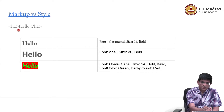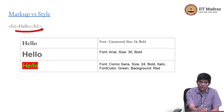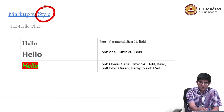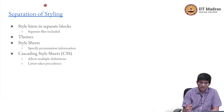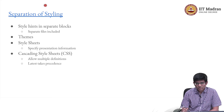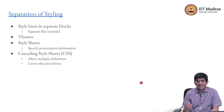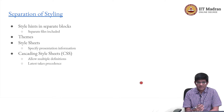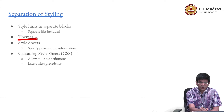Markup does not tell you anything about what the content should look like - that is determined by style. This separation of styling from markup is what allows us to create what are usually referred to as themes.